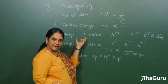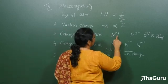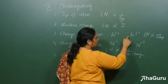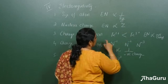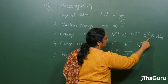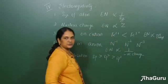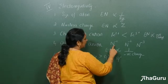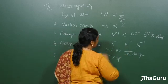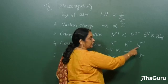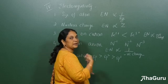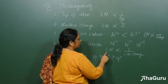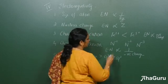Coming to the charge on the cation: comparing Fe²⁺ and Fe³⁺, Fe³⁺ has a higher positive charge so it can attract the shared pair of electrons more strongly. Therefore Fe³⁺ is greater than Fe²⁺ in electronegativity — electronegativity is directly proportional to the positive charge. For the charge on the anion, taking nitrogen N⁻¹, N⁻², and N⁻³: as negative charge increases, there are already more electrons, so pulling more electrons causes repulsion. Therefore electronegativity is inversely proportional to the negative charge.